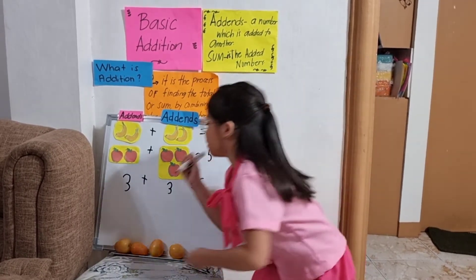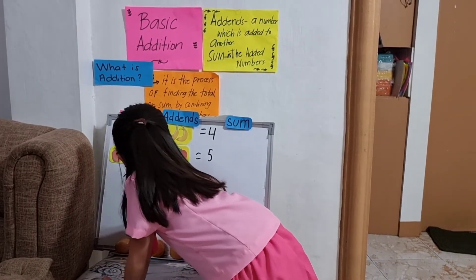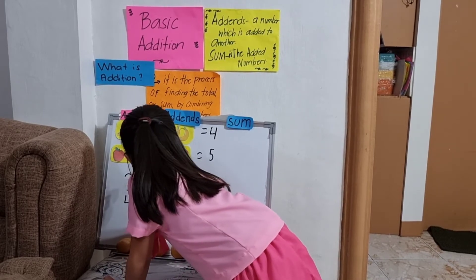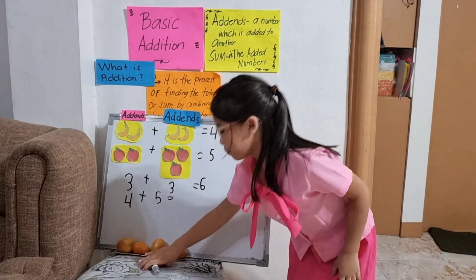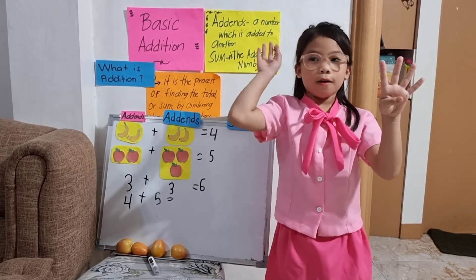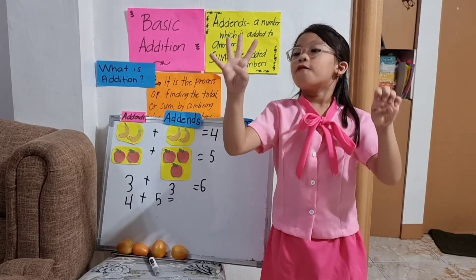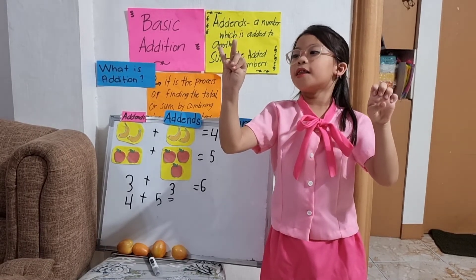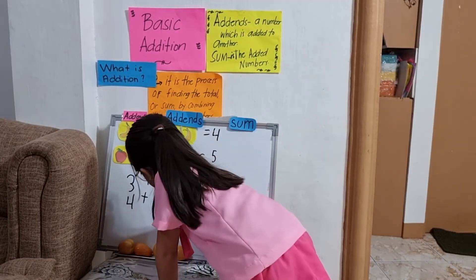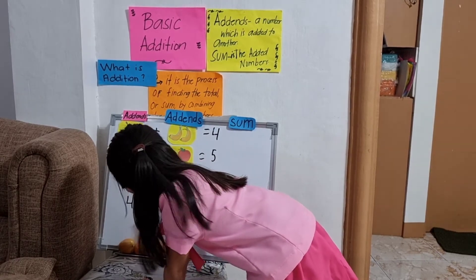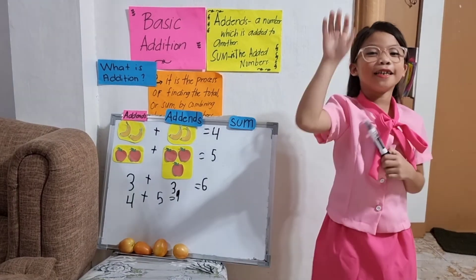Another example. Four plus five equals — let's count: one, two, three, four, five, six, seven, eight, nine. The answer is nine. Very good.